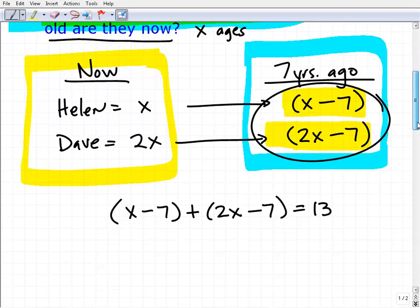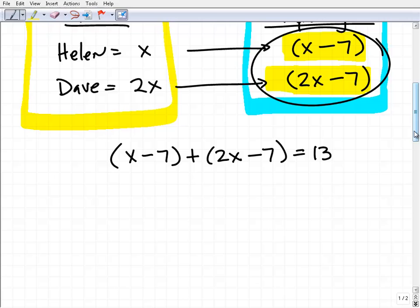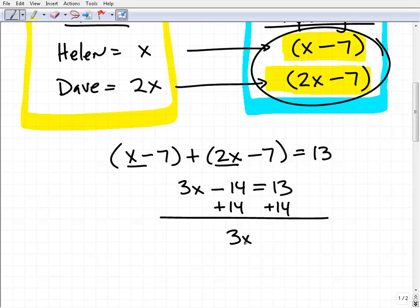I know all of you are masters at solving equations. Let's solve this equation for X. This is going to be 3X minus 14, I've got these two sevens here, equals 13. Now I can add 14 to both sides. Now I get 3X equals 27. So X is going to be equal to nine.